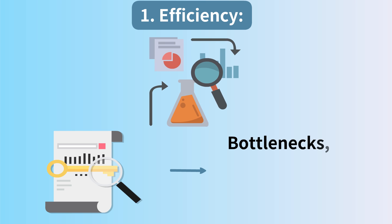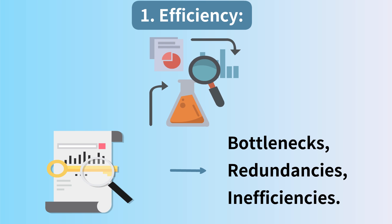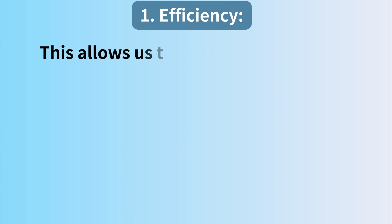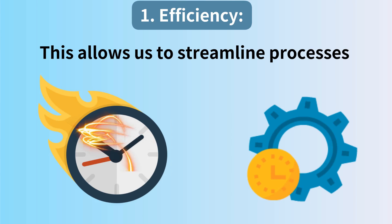Number one: Efficiency. By dissecting a system, we can identify bottlenecks, redundancies, and inefficiencies. This allows us to streamline processes and make things work faster and smoother.